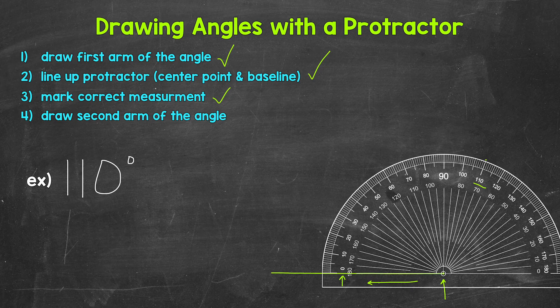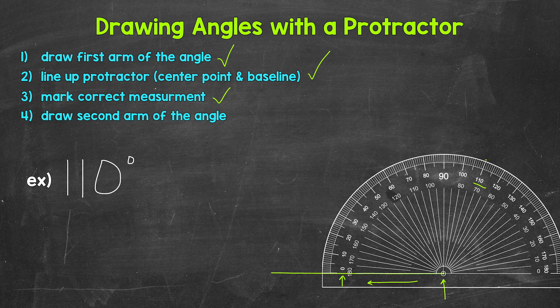Lastly, step four, we need to draw our second arm of the angle. What we need to do is pick up our protractor and use a straight edge to connect our dot on the end of the first arm. It's where we lined up the center point of the protractor to the dot that we made at 110 degrees.